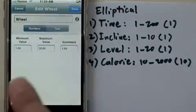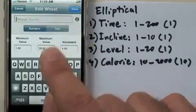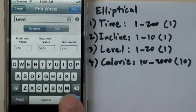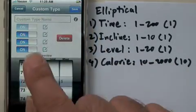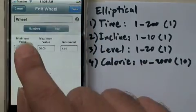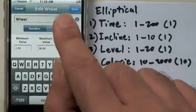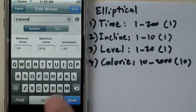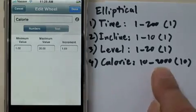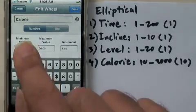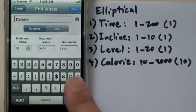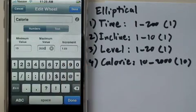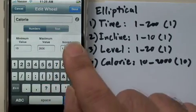We go to the third wheel. We call this one level. I go to the fourth wheel. I call it calorie, 10 to 2,000, increments of 10.